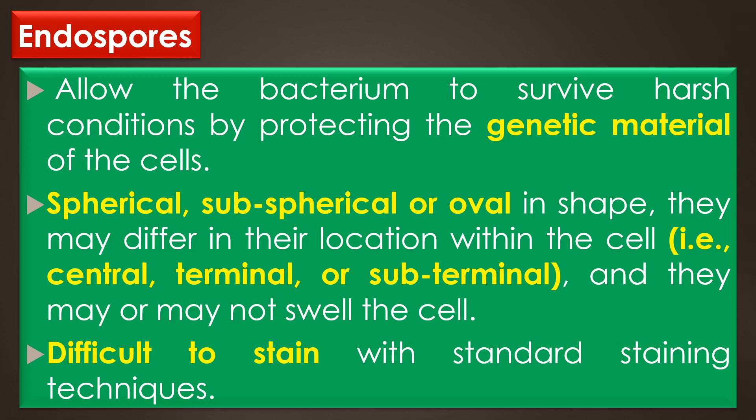The endospores may be spherical, sub-spherical, or oval in shape. They may differ in locations within the cells — that is central location, terminal location, or sub-terminal location — and they may or may not swell the cell. Endospores are difficult to stain with standard staining techniques because they are impermeable to the dyes typically used for the staining process.